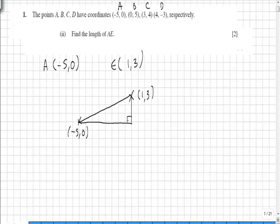Calculating the x distance along from -5 to 1 is in fact 6. From 0 to 3 is 3, the y distance, and we therefore have a right-angled triangle where this distance is in fact AE.